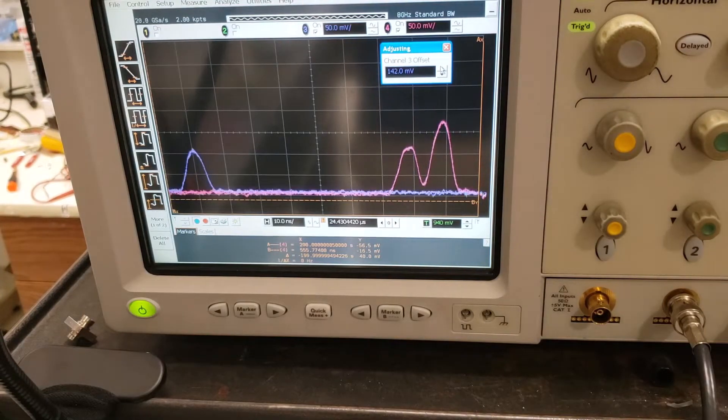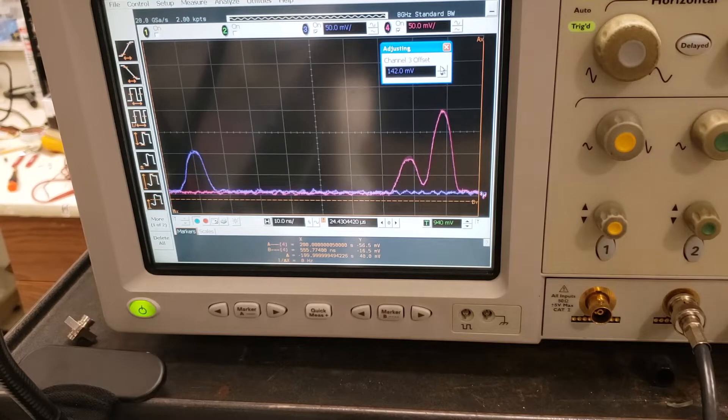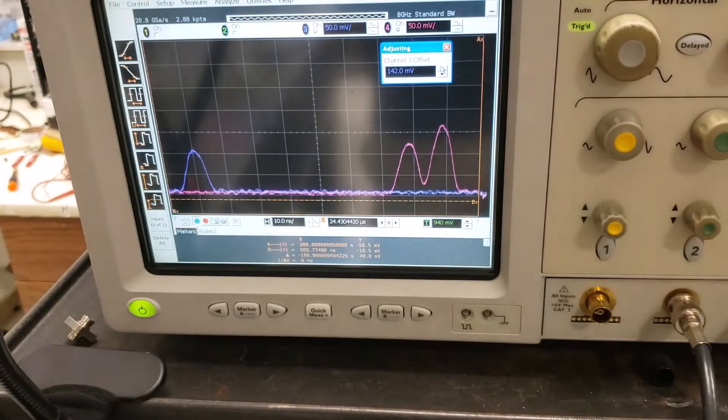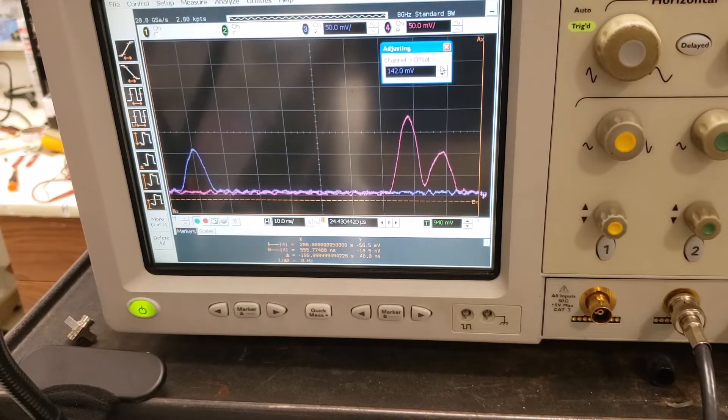Now watch what happens when I modify the polarization controlling paddles here before the coupler. You'll notice that the blue pulse over here remains completely unchanged, whereas these dual pulses here keep changing whenever I modify the paddles.